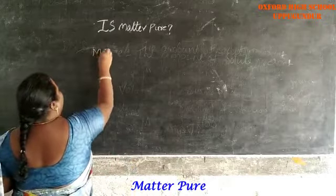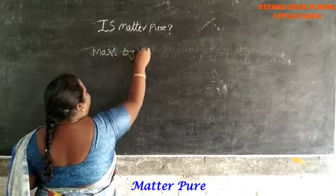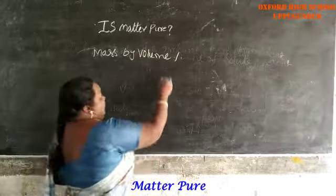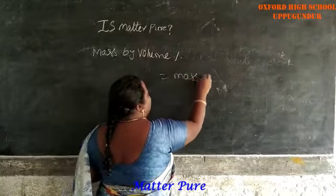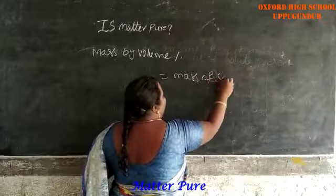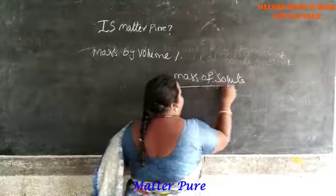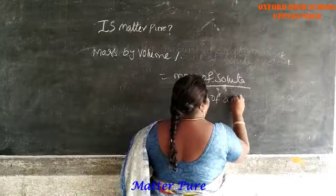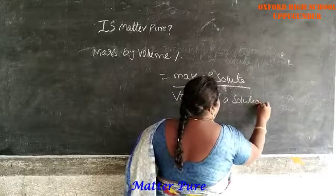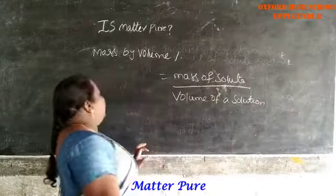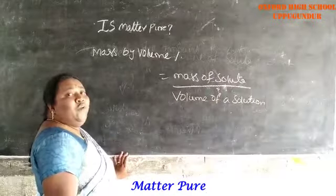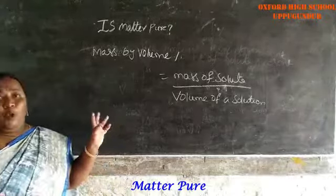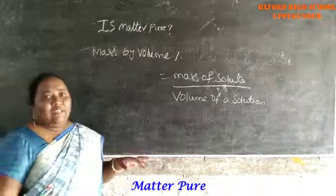Next, mass by volume percentage. Mass by volume percentage is equal to mass of solute divided by volume of solution. In this model we can get a problem and work through it.